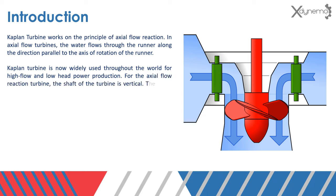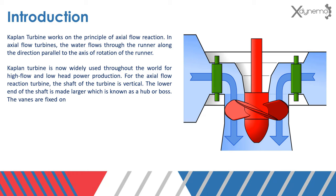For the axial flow reaction turbine, the shaft of the turbine is vertical. The lower end of the shaft is made larger, which is known as a hub or boss. The vanes are fixed on the hub, and hence the hub acts as a runner for the axial flow reaction turbine.